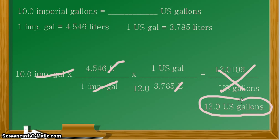12.0 US gallons. So that is the amount in US gallons equivalent to 10.0 imperial gallons. That's all for this example. Thank you for listening and continue learning.